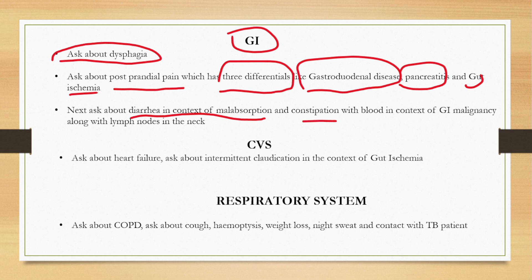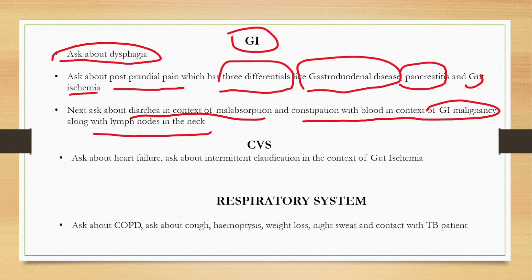Also ask about constipation with blood in the context of GI malignancy. Ask about any lymph node enlargement in the neck, which can occur in GI malignancy leading to left supraclavicular lymph node enlargement.